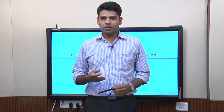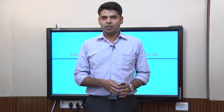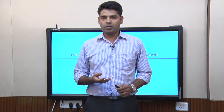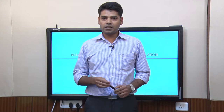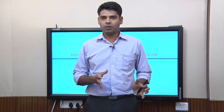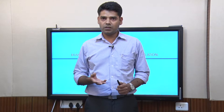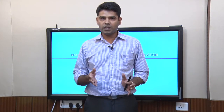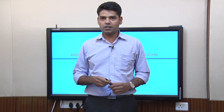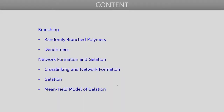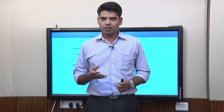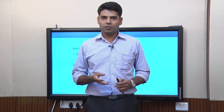We will discuss the transition where network formation results through cross-linking between different chains. This transition is referred to as gelation. The network polymer that forms starting from the initial reaction mixture is referred to as a gel, and the transition where the first network polymer spanning the entire system appears is called gelation. We will also briefly discuss a few results from the mean field model of gelation.